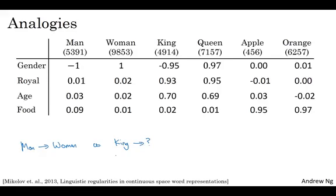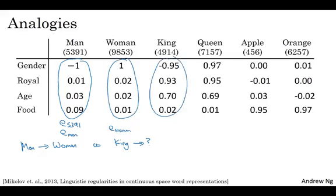But is it possible to have an algorithm figure this out automatically? Well, here's how you could do it. Let's say that you're using this four-dimensional vector to represent man. So this would be E5391. Although just for this video, let me call this E subscript man. And let's say that's the embedding vector for woman. So I'm going to call that E subscript woman, and similarly for king and queen. And for this example, I'm just going to assume you're using four-dimensional embeddings rather than anywhere from 50 to 1000 dimensional, which would be more typical.